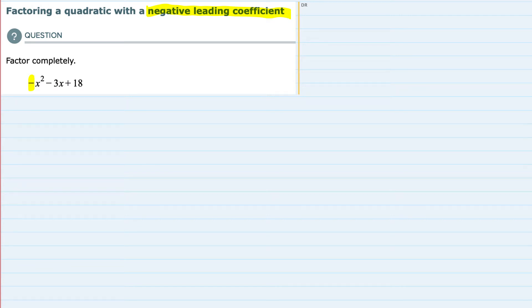So that's the first thing that I want to address, is the negative leading coefficient. In order to get rid of that negative, I can factor a negative, if it's helpful to think of it as a negative 1, out from each one of those three terms.